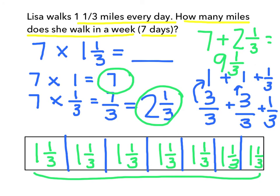So if I wanted to answer the question — what is seven times one and one third — the answer is nine and one third. So Lisa walked nine and one third miles in seven days.